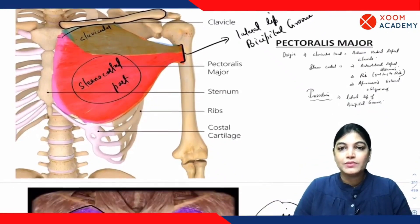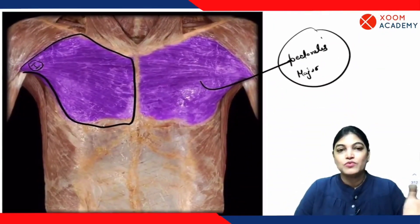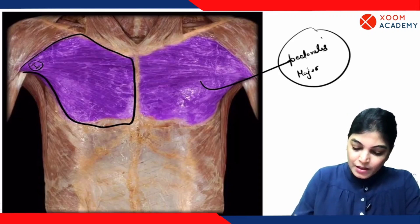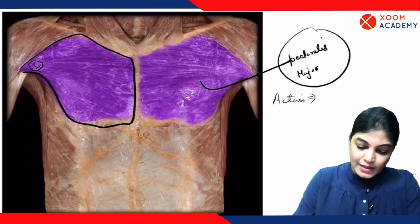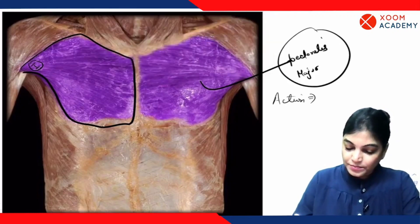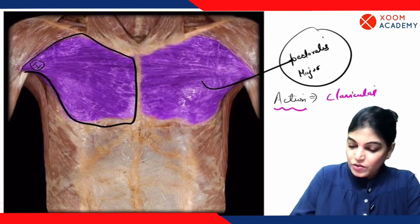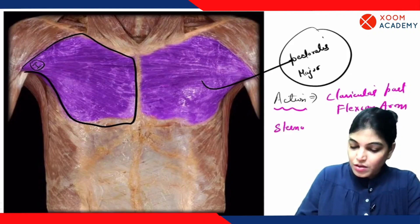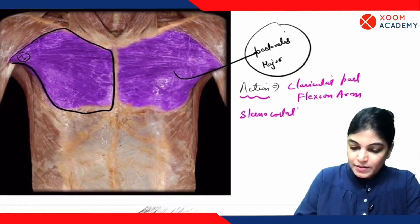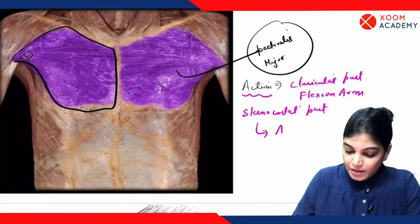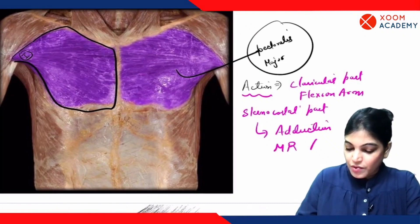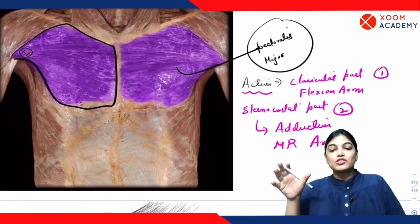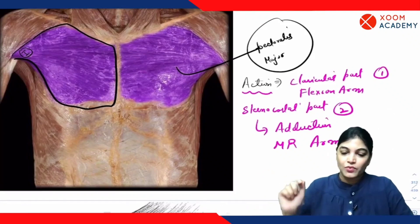In this cadaveric image we can again appreciate the pectoralis major muscle. Regarding its action: the clavicular part causes flexion of the arm, while the sternocostal part causes adduction and medial rotation of the arm. So the clavicular part produces flexion and the sternocostal part produces adduction and medial rotation.